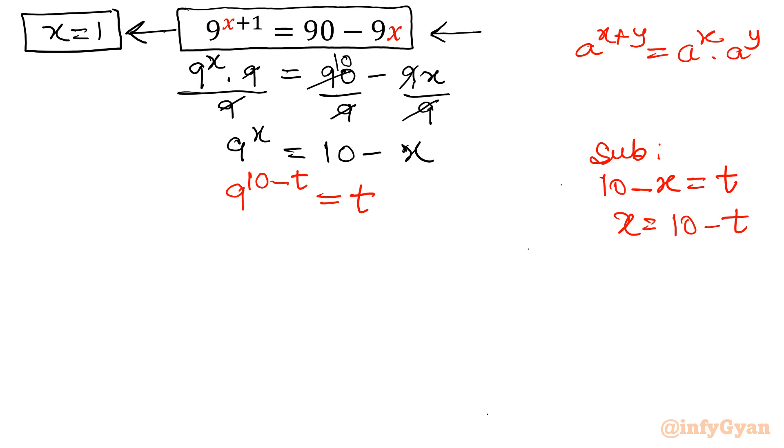Now I will use again one more property of exponent. That is a power x minus y can be written as a power x over a power y. I will write 9 power 10 minus t. I will write 9 power 10 over 9 power t equal to t. Multiply both sides by 9 power t. So equation will be t times 9 power t equal to 9 power 10.